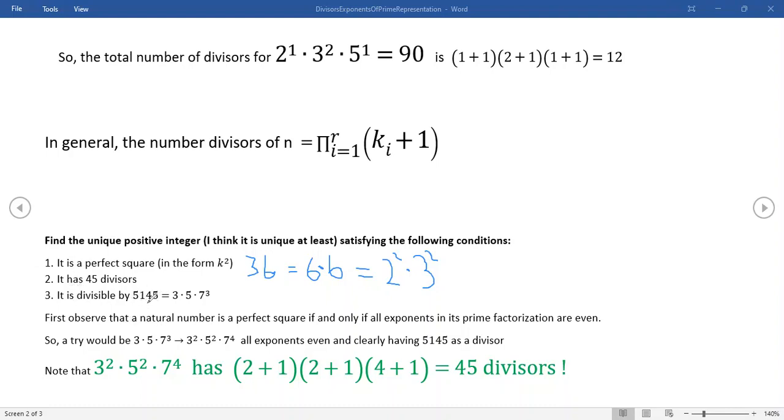It also has to be divisible by 5145. And I wrote down the prime factorization for you guys. That's 3 times 5 times 7 cubed for that one. All right. Now, so that means a try would be just to push this to the next level where everything had an even exponent. And that's exactly what we did on this step right here.